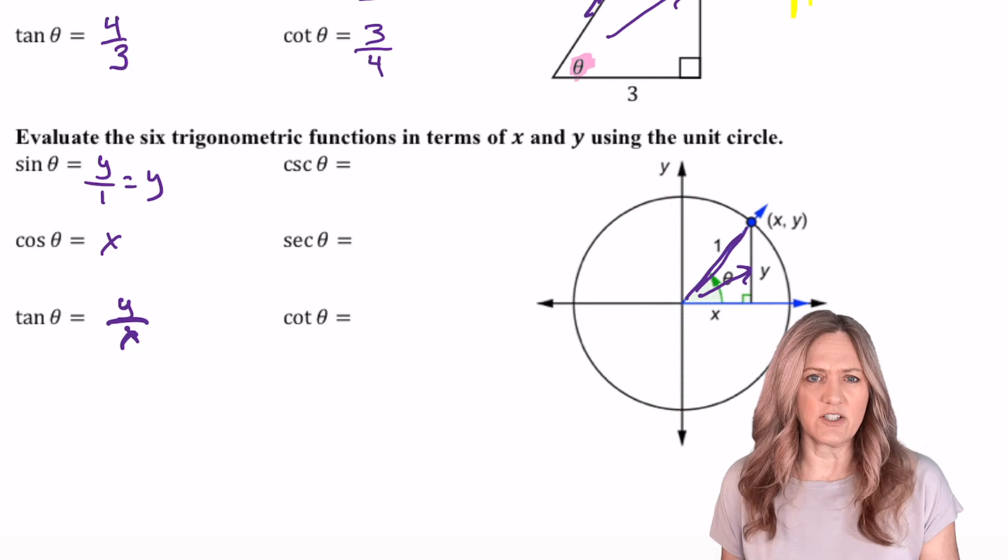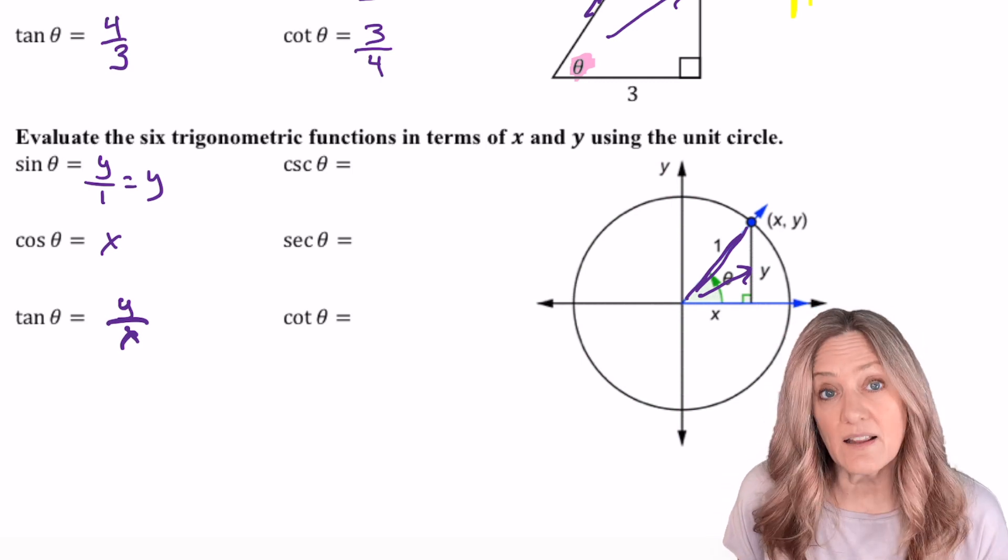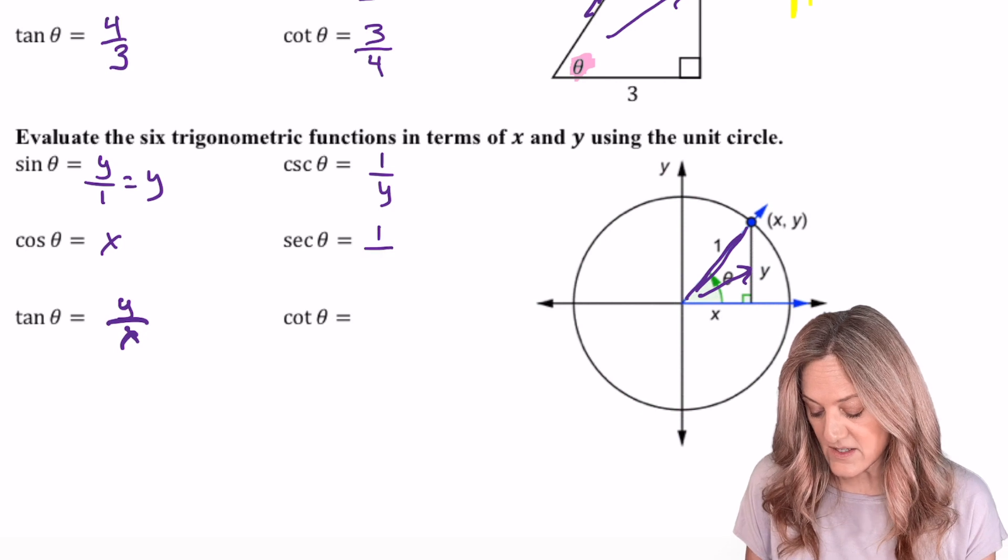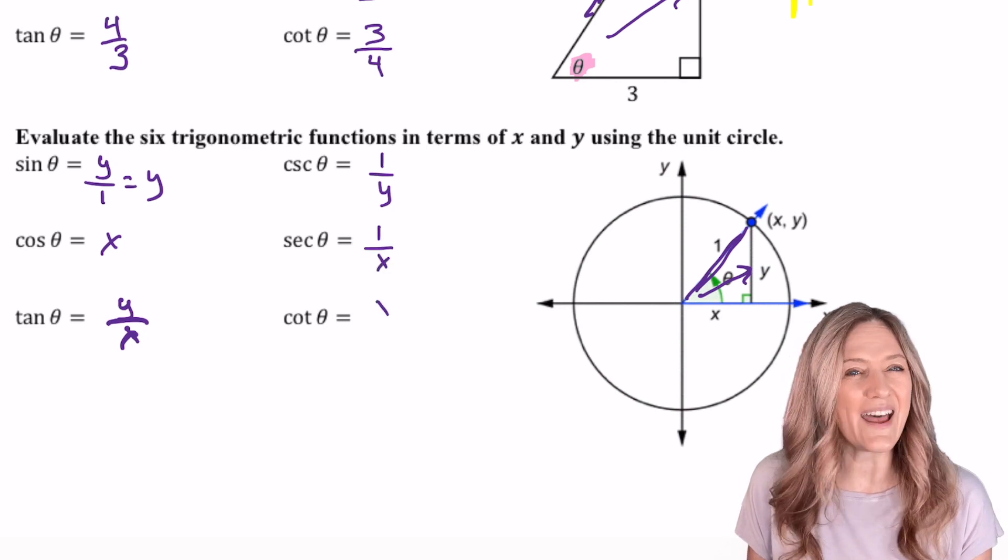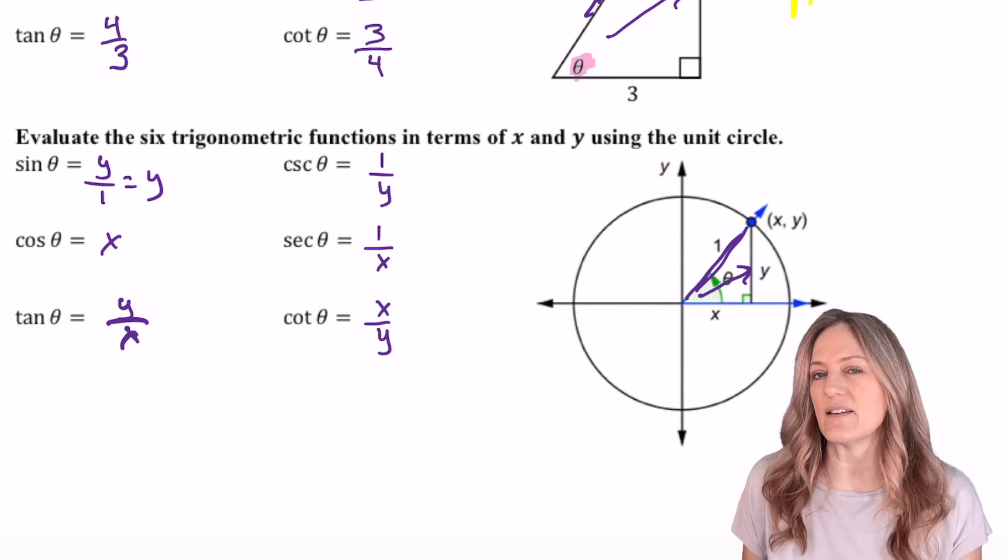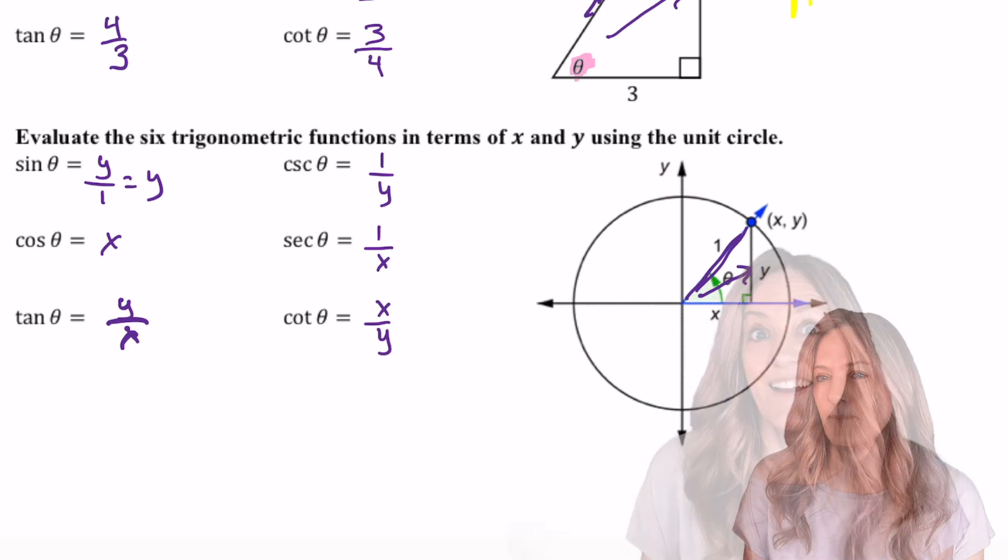To get our reciprocal functions, then of course, we just need to take the reciprocal. Cosecant will be 1 divided by y, secant 1 divided by x, and cotangent x divided by y. For the most part, that x divided by y is the one we'll work with a little bit more.